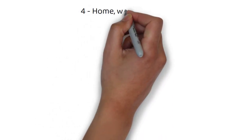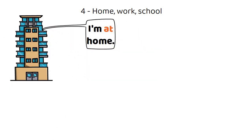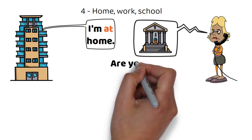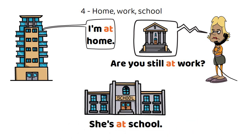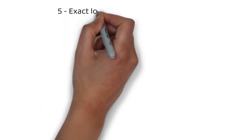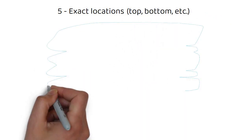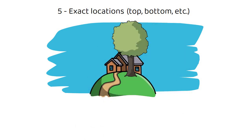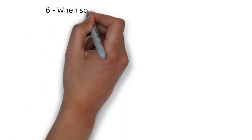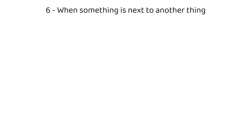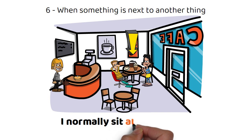Number four: home, work, or school. For example, I'm at home. Are you still at work? She's at school. Number five: exact locations — top, bottom, etc. For example, there is a tree at the top of the hill. Number six: when something is next to another thing. For example, I normally sit at this table.